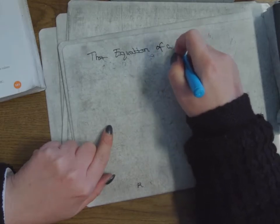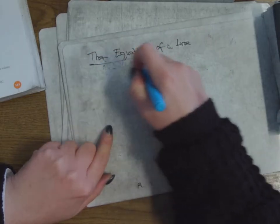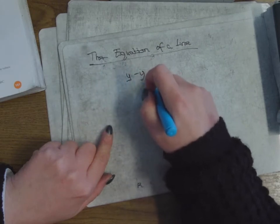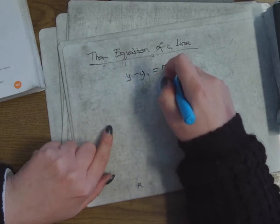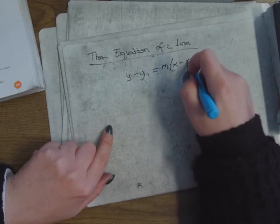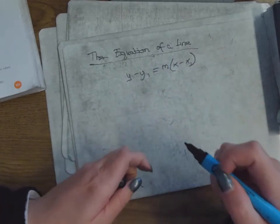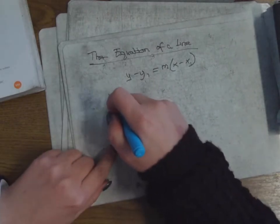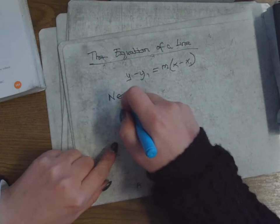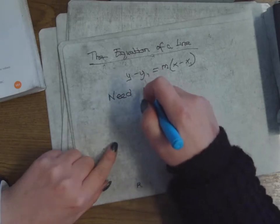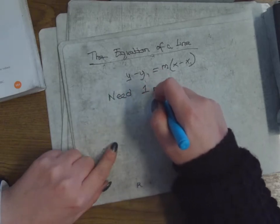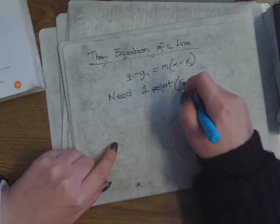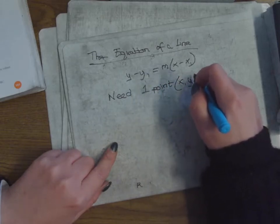You go to the log tables and get the formula for the equation of a line. The equation of a line is y − y1 = m(x − x1). What do you need to fill out that formula? You need one point, which you call (x1, y1), and m stands for slope — you need the slope.